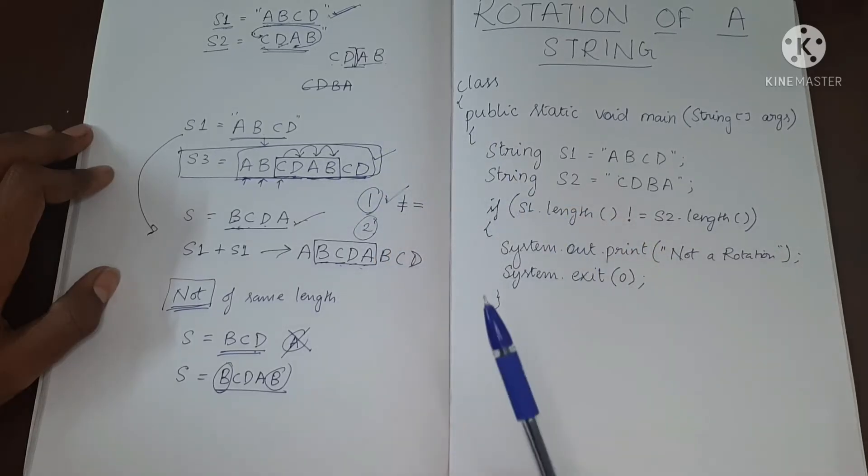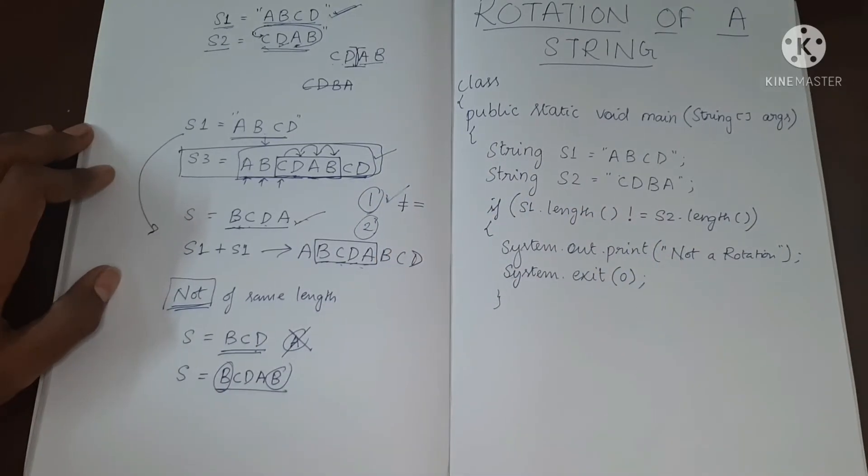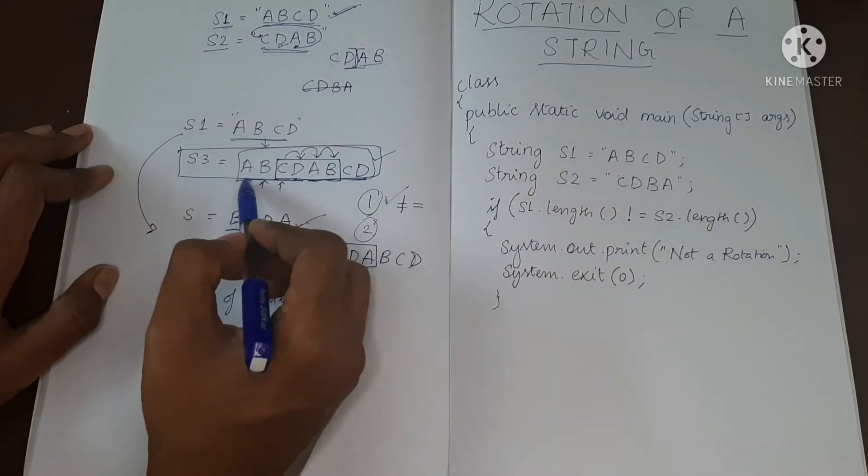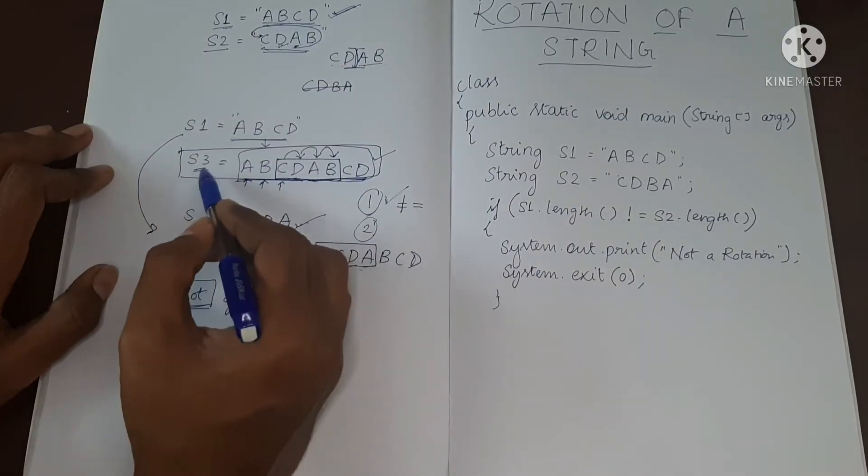What is the second part? We will take string one twice and then we'll store it in a new string variable.